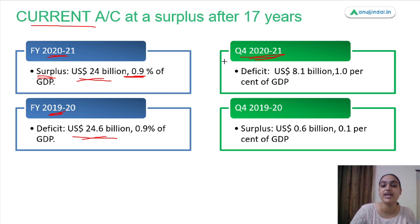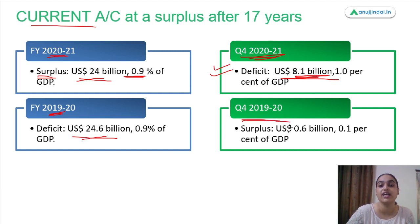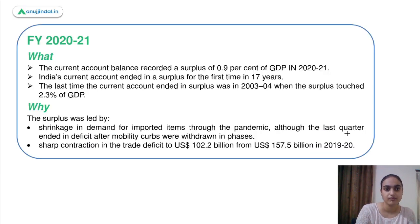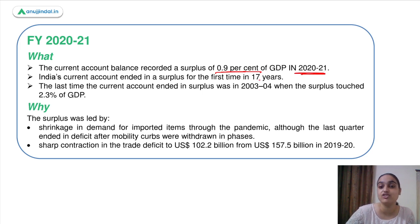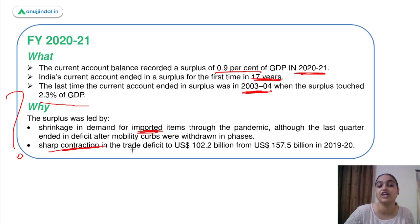The fourth quarter data shows that this year there is a current account deficit of around 8.1 billion US dollars, whereas the fourth quarter of the previous year had a surplus of around 0.6 billion. So why did we see a surplus for the full financial year 2020-21? This was first time in 17 years — the last surplus was in 2003-04 at 2.3% of GDP. The major reason is the shrinkage in demand for imported items due to the pandemic, causing a sharp contraction in the trade deficit.